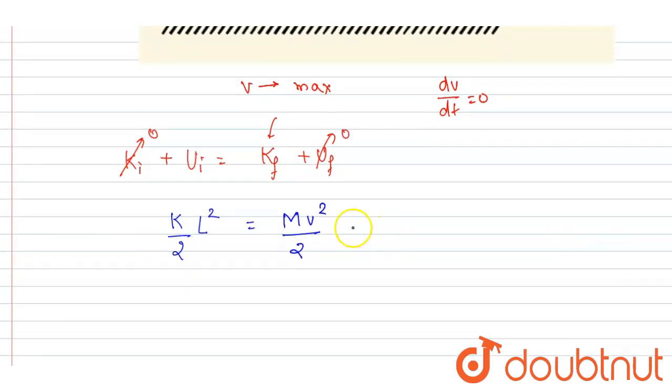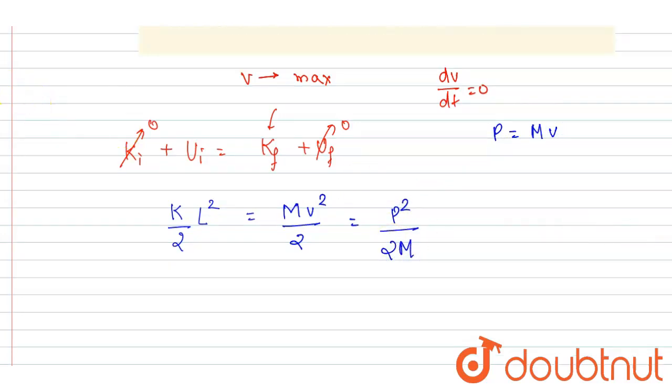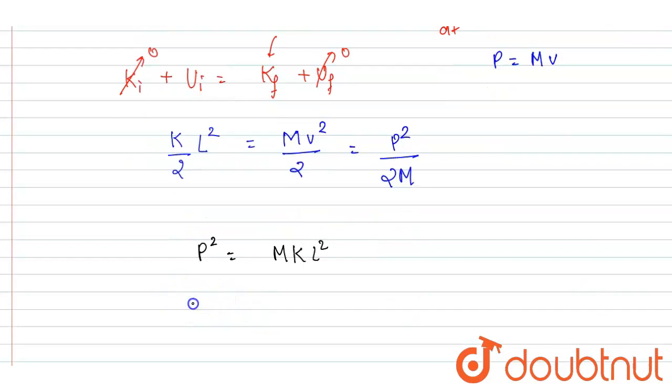And we want the momentum, so let's write it as: if I write down the momentum is equals to m into v, so we can write down this as, from here I will write the p square. This half will get cancelled out and I will get p square is equals to m k l square. Take under root both sides and you will get the momentum is equals to under root of m k into l, and this will be the answer of this question.